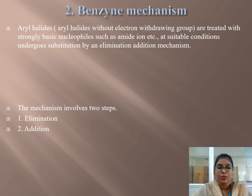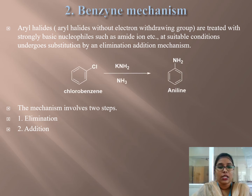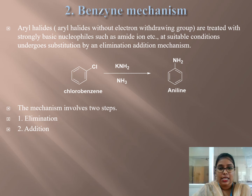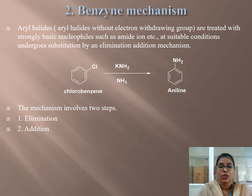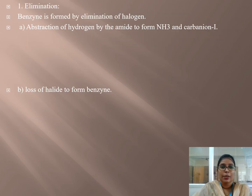In the bimolecular displacement mechanism, the halogen bond is broken and the nucleophile bond is formed on the benzene ring. Whereas in the benzyne mechanism, elimination and addition both occur. For example, chlorobenzene in the presence of potassium amide and liquid ammonia is converted into aniline. The benzyne mechanism also occurs in two steps: first, elimination of the halogen; second, addition of the nucleophile.